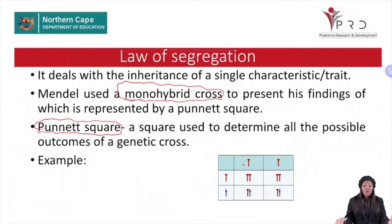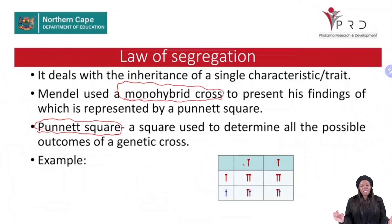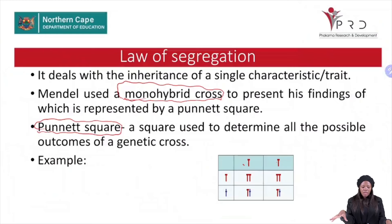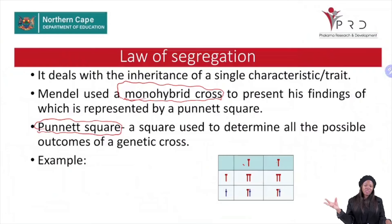A homozygous gene can also be referred to as a pure breed. When the exam tells you an individual is a pure breed, always remember that the alleles are identical — they can be capital letters or small letters. We have determined the possible outcomes: all individuals reproduced by these two parents will be tall in height. Two of the individuals will be homozygous tall and another two will be heterozygous tall.